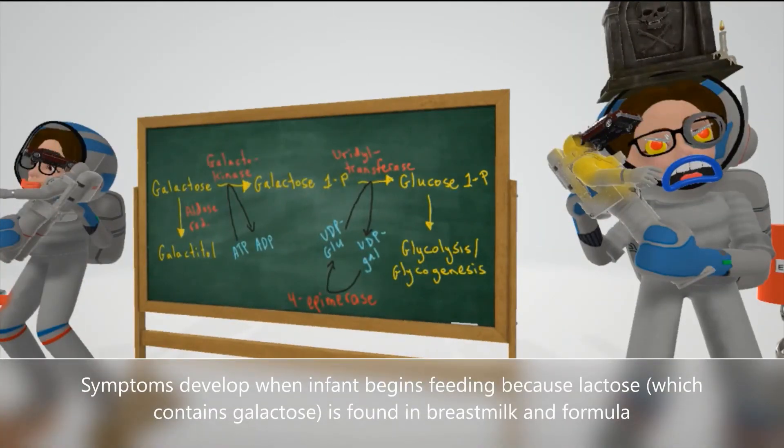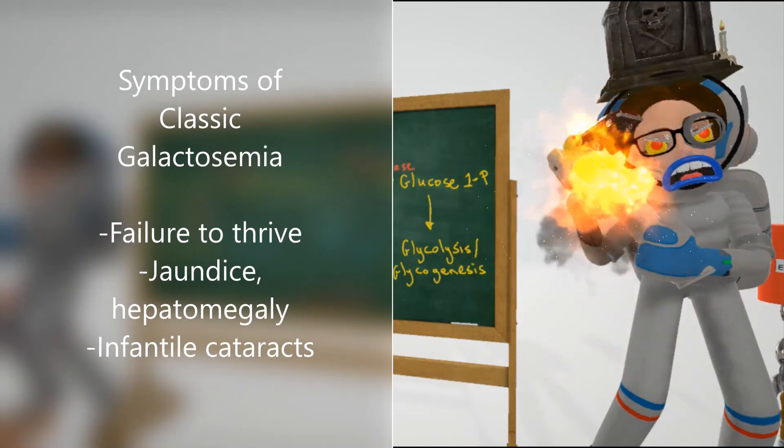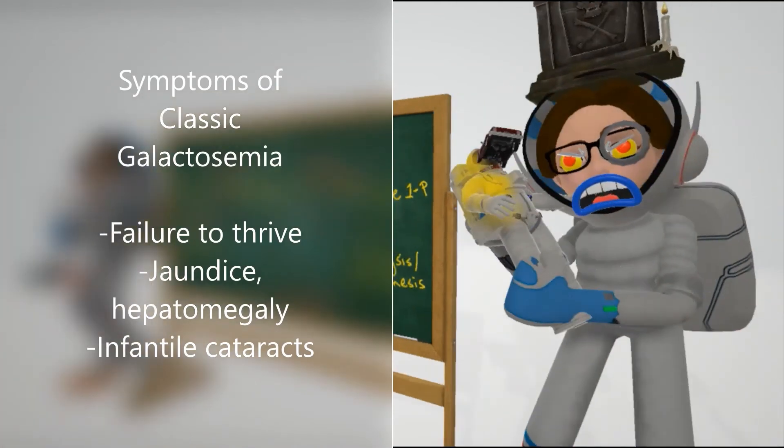Symptoms develop when the infant begins feeding because lactose is present in breast milk and routine formula. This includes failure to thrive - that's why the baby is exploding in this scene. Notice the baby is yellow - remember the jaundice associated with liver problems including hepatomegaly.